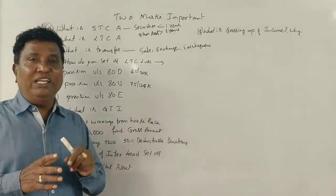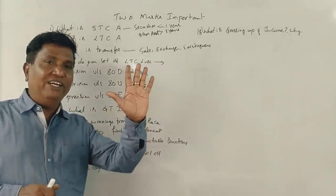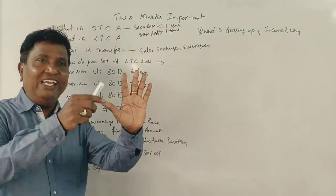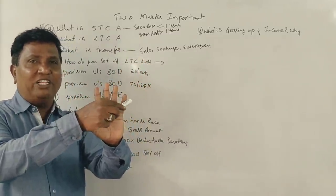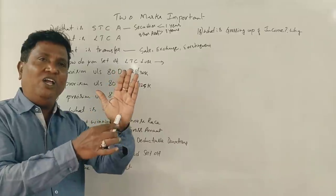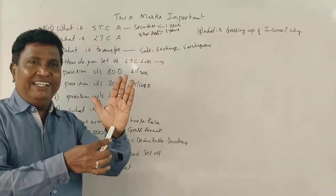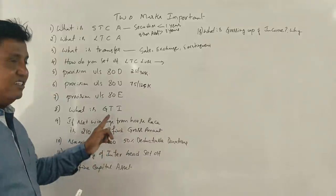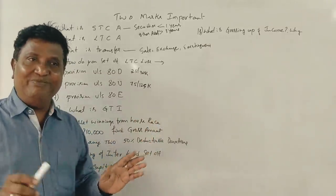What is gross total income? There are five heads of income. Salary, house property, business profession, capital gains, other sources. If you total all the incomes of all the five heads of income, the aggregate of all five heads of income is called as gross total income.